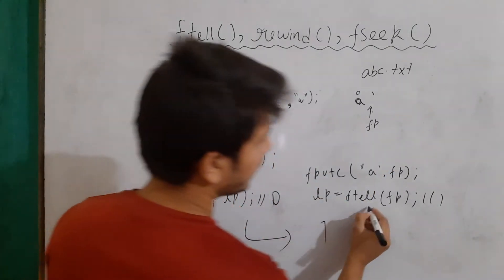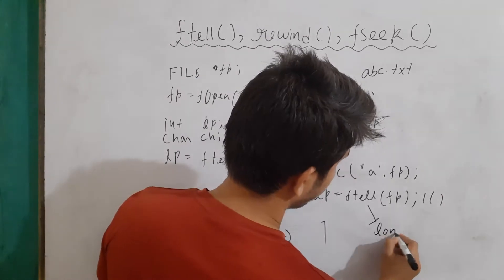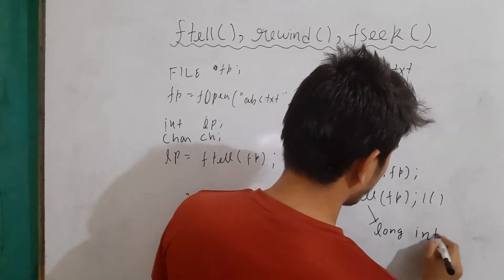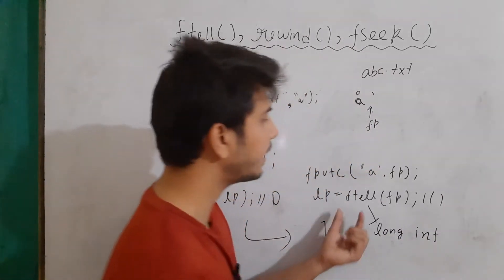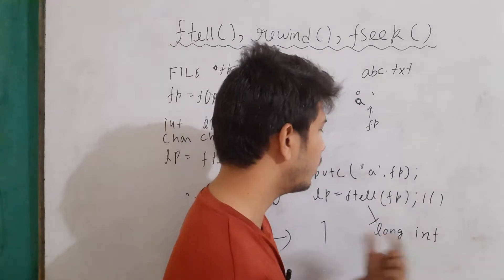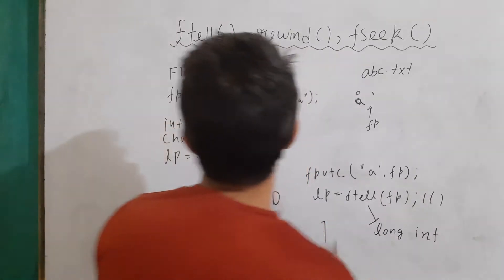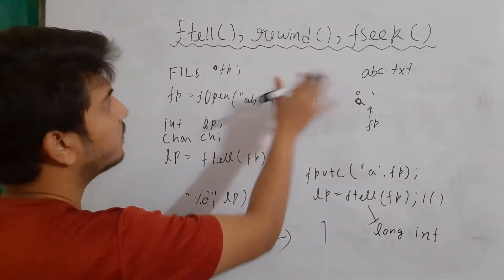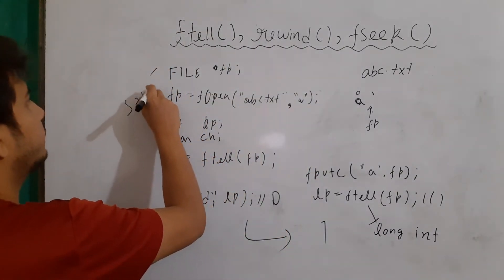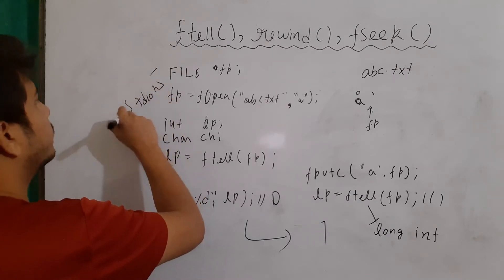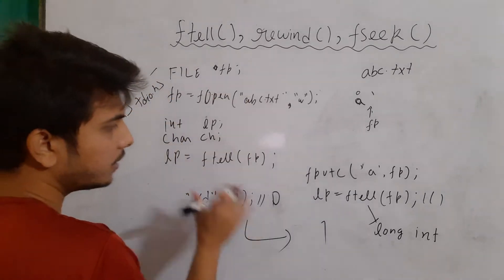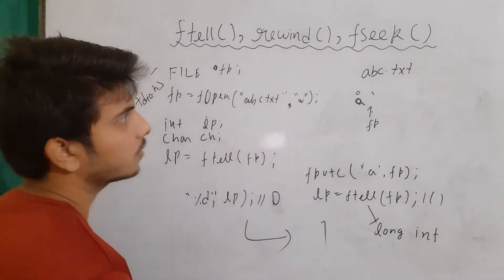Note that the return type of ftell is long int. Also, all three functions — ftell, rewind, and fseek — are defined in the stdio.h header file. So we have to include this file to use these functions.